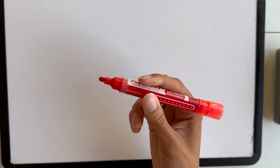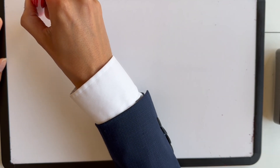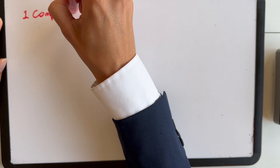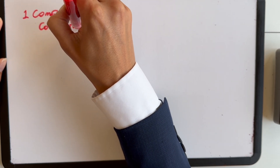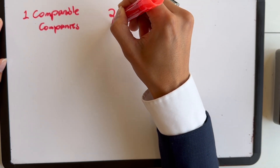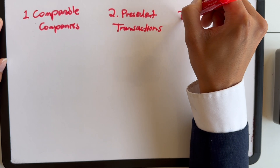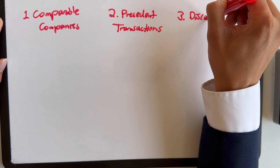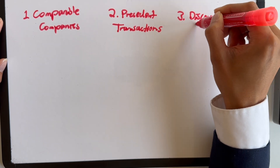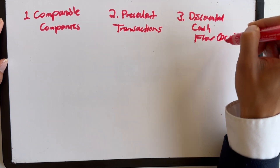There are three major valuation methodologies for companies — and there's more than this, but these are the basics. The first is comparable companies. The second is precedent transactions. And then the third is discounted cash flow, or DCF. We're going to talk a lot more about these in the future, but this is just the framework of the three major methodologies.